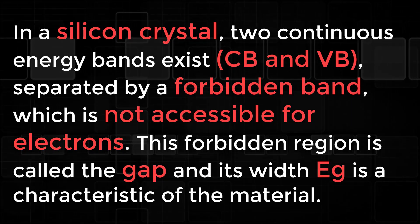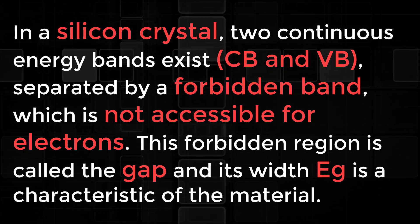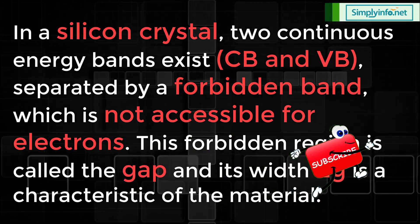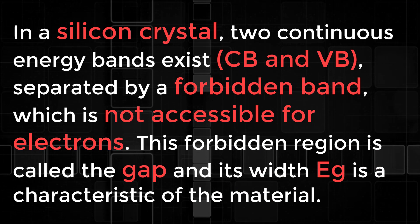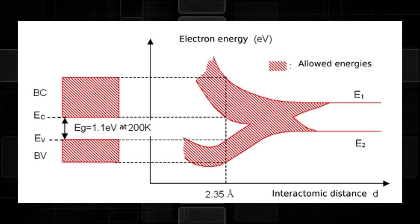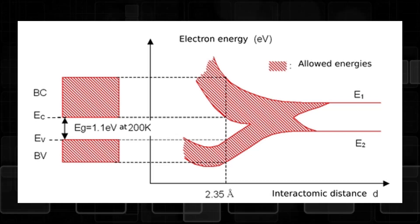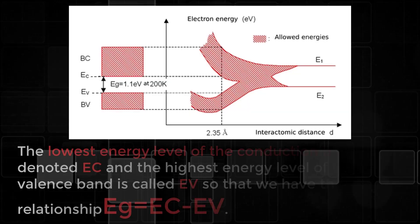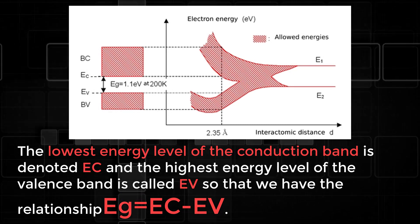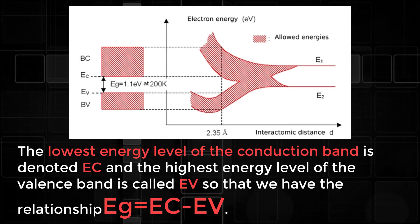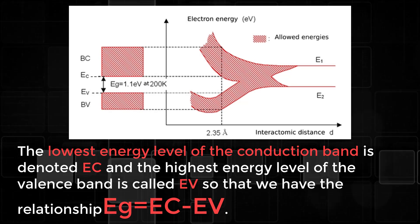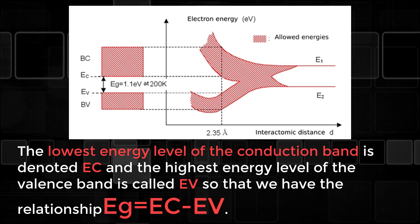In a silicon crystal, two continuous energy bands exist, CB and VB, separated by a forbidden band which is not accessible for electrons. This forbidden region is called the gap and its width EG is a characteristic of the material. The lowest energy level of the conduction band is denoted EC and the highest energy level of the valence band is called EV, so that we have the relationship EG is equal to EC minus EV.